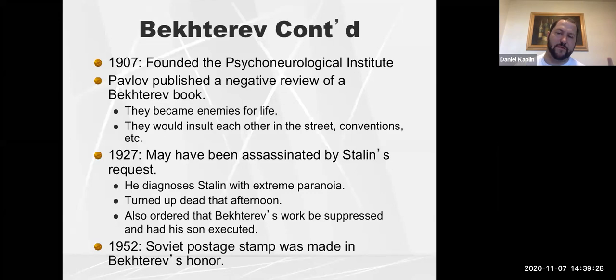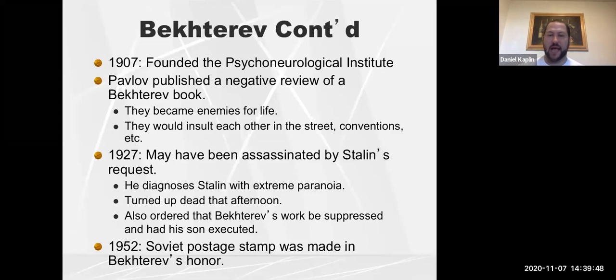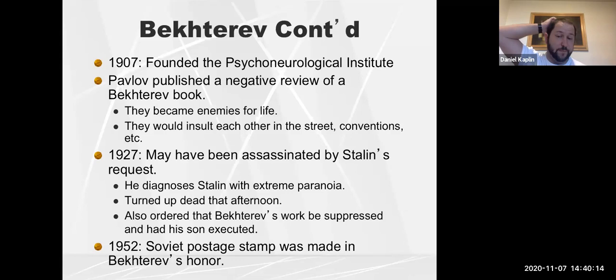Bekhterev focused more on muscular responses while Pavlov focused more on glandular responses. In 1927 Bekhterev died — some suggest he was assassinated. He went to see Stalin, diagnosed him with paranoia, and then turned up dead. Stalin suppressed Bekhterev's work and had his son executed as well. In 1952, as a corrective measure, the Soviet Union issued a postage stamp in Bekhterev's honor.